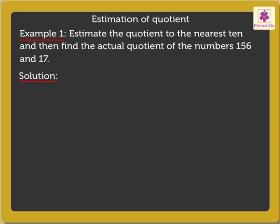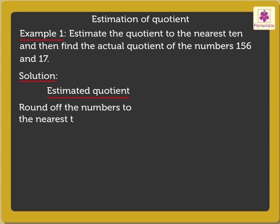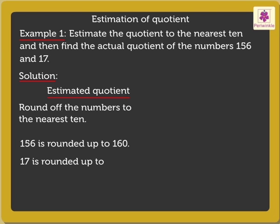Here, to estimate the quotient, firstly, we round off both numbers to the nearest 10. So, 156 is rounded up to 160 and 17 is rounded up to 20.